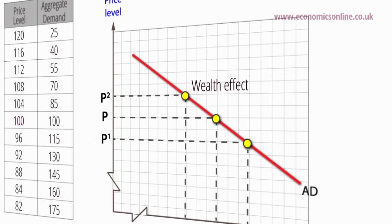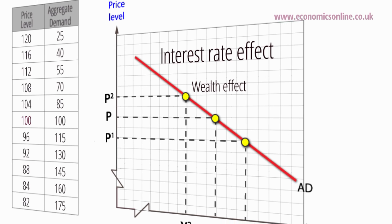Secondly, the lower price level means households and firms need to keep less of their assets in a liquid form and can deposit excess assets with banks as savings, or purchase stocks and shares, or in the case of firms, buy bonds. This extra liquidity into the financial system puts downward pressure on interest rates, which can stimulate investment and consumer spending. This is called the interest rate effect.